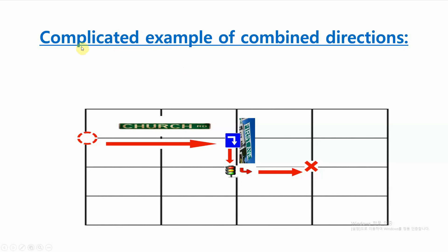Here's a more complicated example of combined directions. Are you able to say these directions already? You try first. We start here at the circle. How'd you do? Shall we try it together?